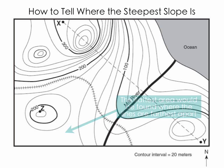Just to recap: the steepest slope will be found where the lines are close together, because there's a big change in elevation over a short distance. The flattest slope would be found where the lines are very widely spaced.